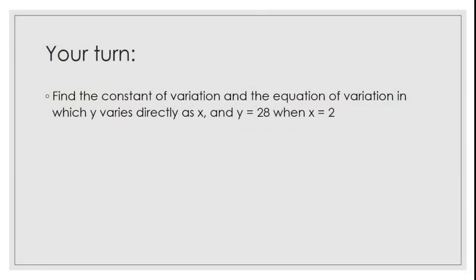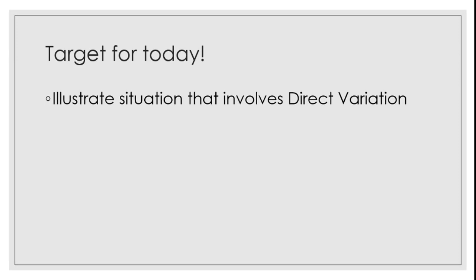Your turn. Find the constant of variation and the equation of variation in which y varies directly as x, when y is 28 and x is 2. I want you to answer on your notebook. You may pause the video and go back to our first example to rewatch it. If you got k as 14 and y equals 14x, then your answer is correct. Congratulations! We have now illustrated the equation involving direct variation.